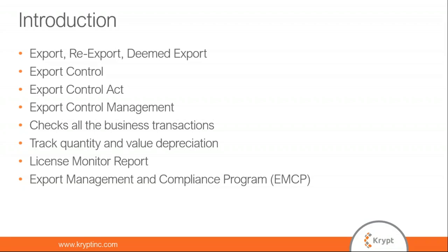What is export? Export in global trade means sending of goods or services produced in one country to another country. The seller is referred to as an exporter and the foreign buyer is referred to as an importer. Whenever there's an export or import, there will be involvement from customs authorities. Export of any country can be distinguished as export of domestic goods and export of foreign goods. The export of foreign goods is generally referred to as re-exports.